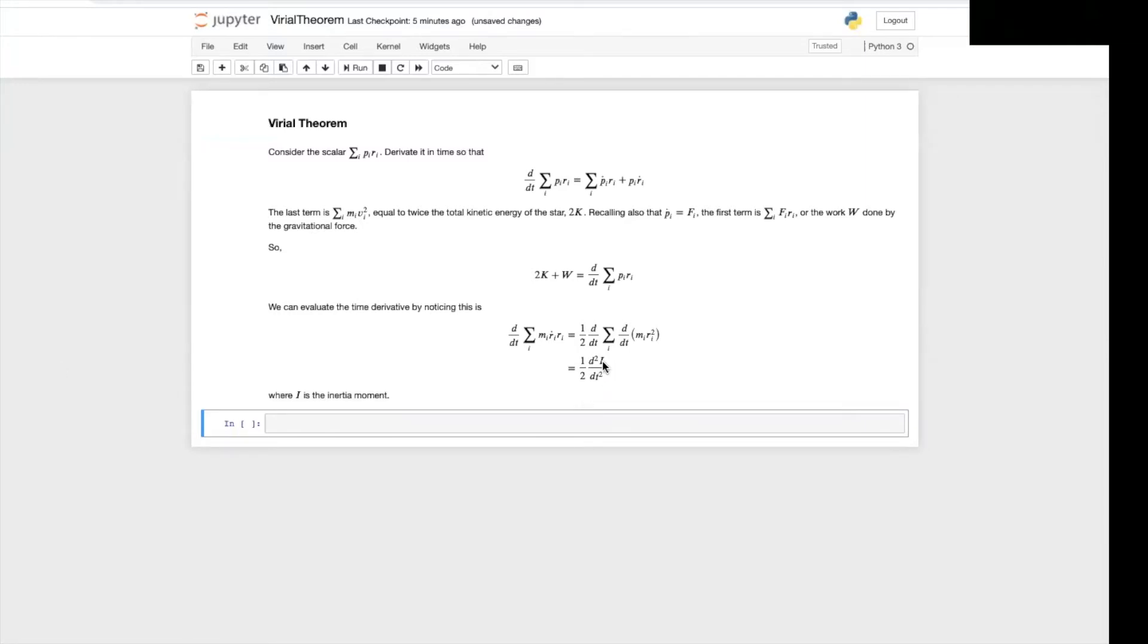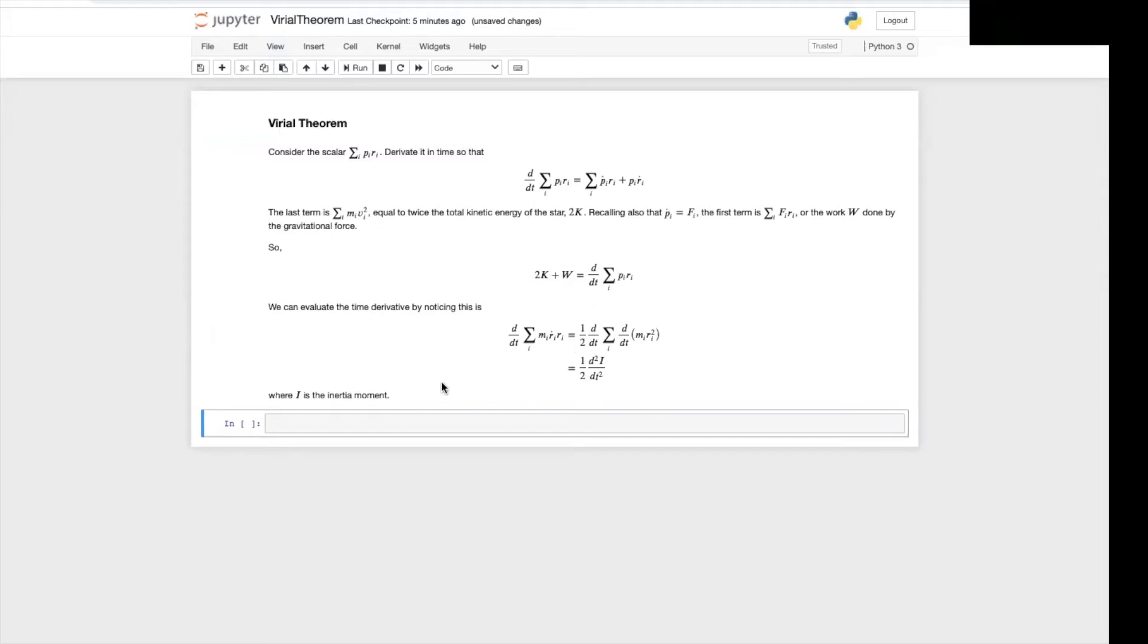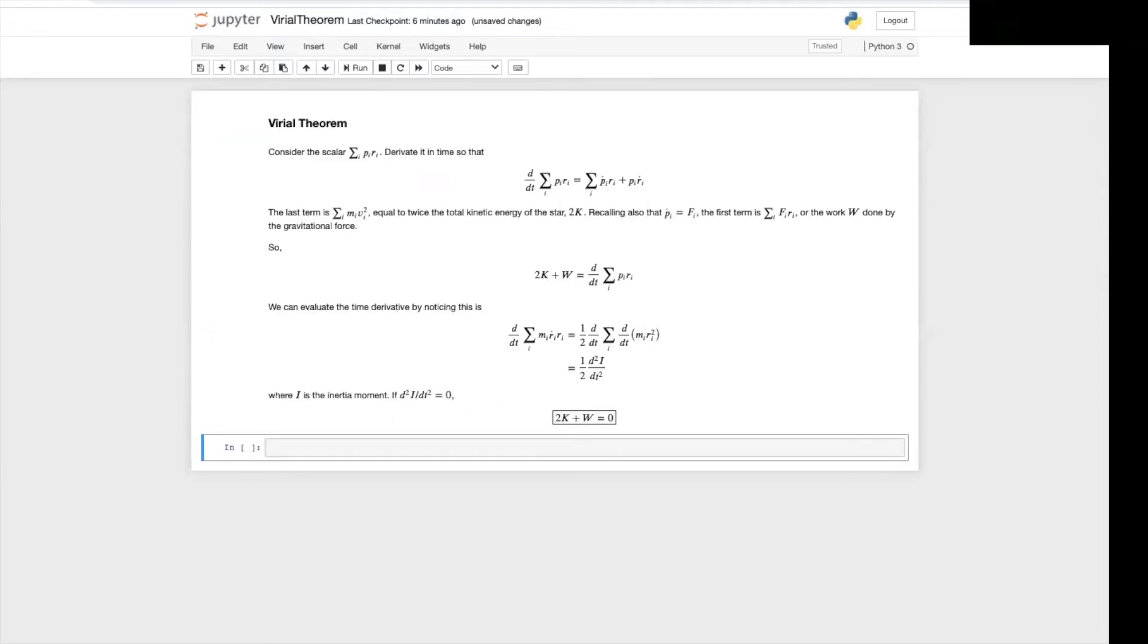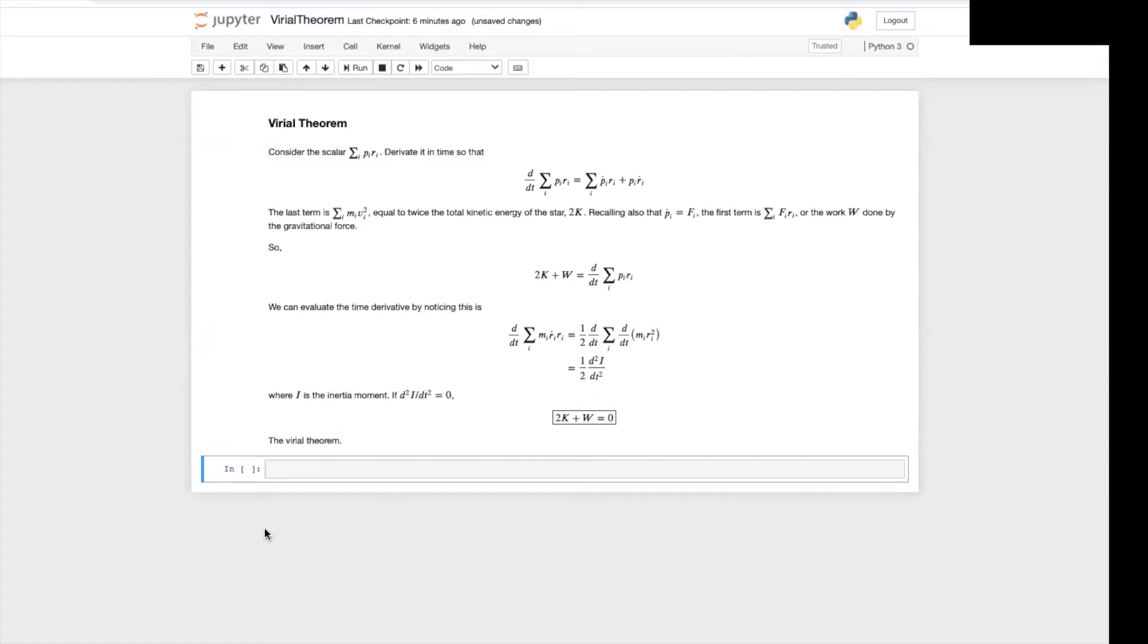If we have that the moment of inertia is constant or the first derivative or the second derivative of the moment of inertia is constant, then we can zero the right hand side and then we simply have 2k plus w equals zero. And this is the Virial theorem.